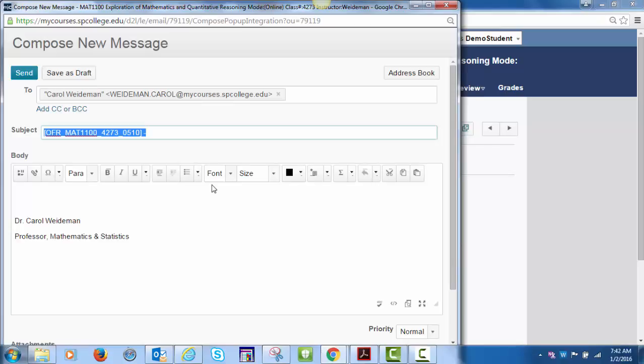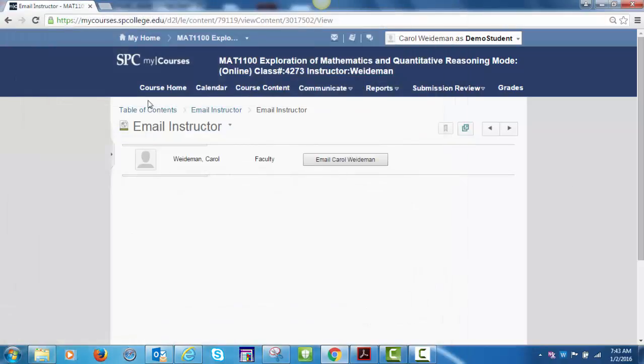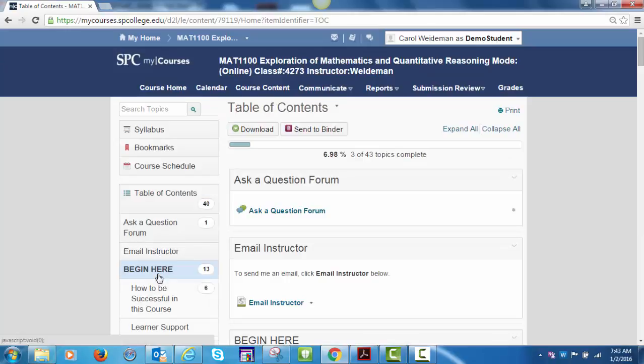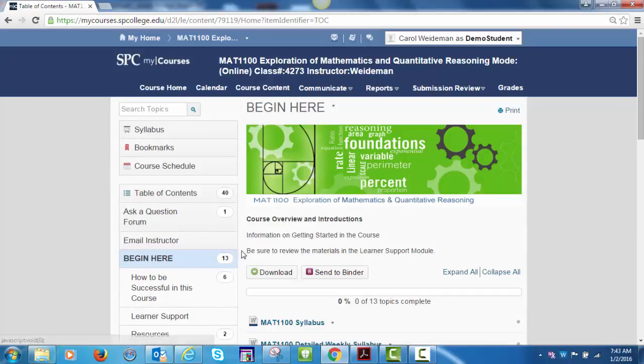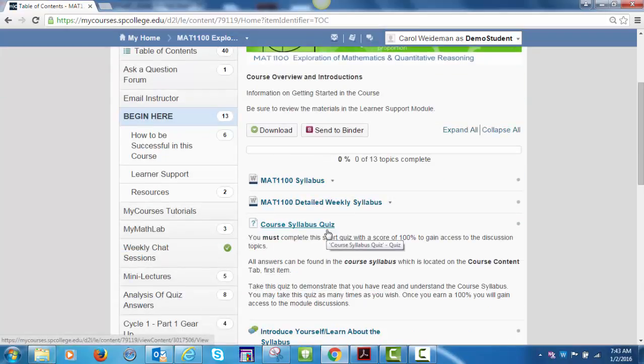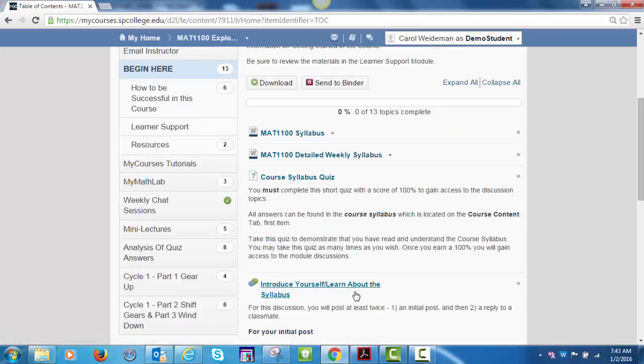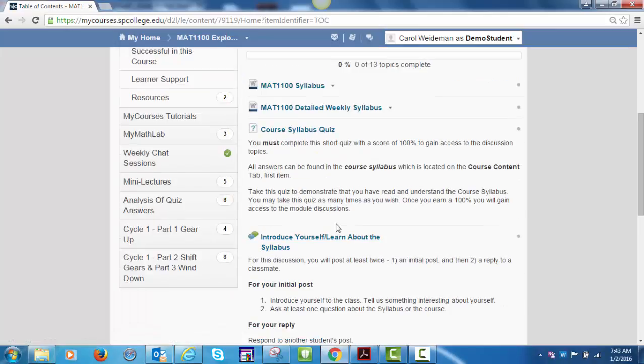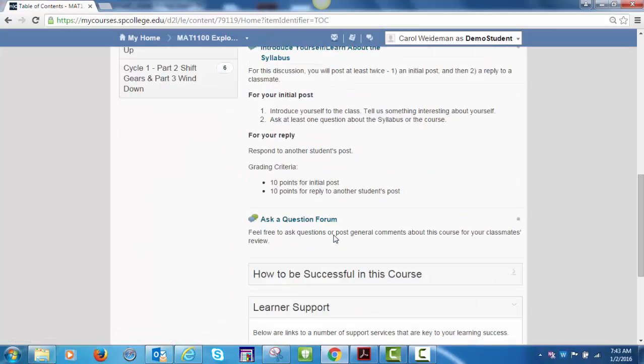Let's take a look at the Begin Here module. A link to the syllabus is included. The syllabus quiz is required—you must earn 100% on one attempt to unlock the unit discussions, which are part of your course grade. You have unlimited attempts on this quiz. The first discussion, Introduce Yourself and Learn About the Syllabus, is located here along with an Ask a Question forum where you can post and interact with other students.